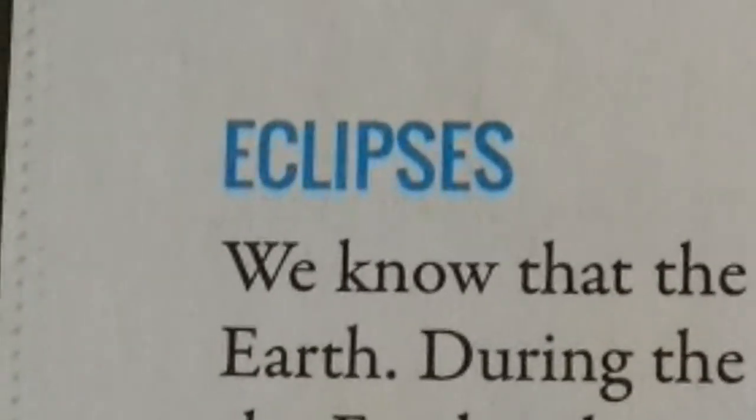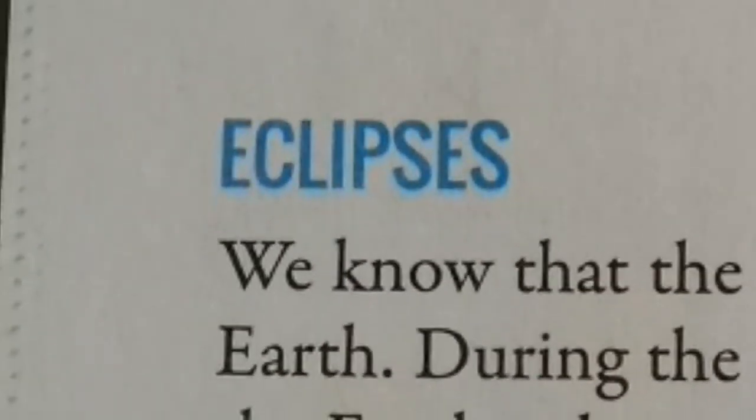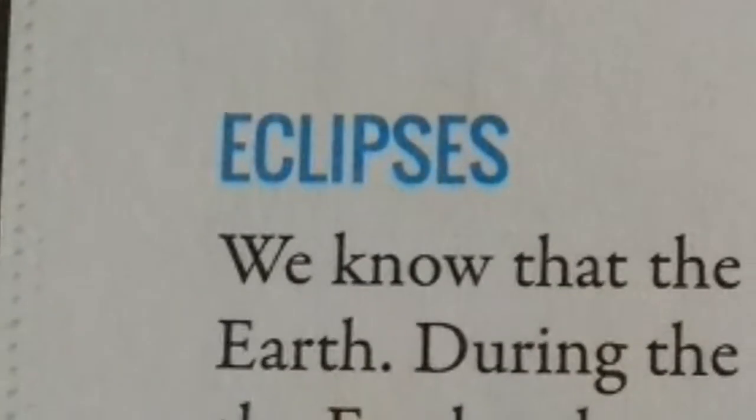The sun is a source of light. The earth and the moon are opaque objects made of solid rocks.